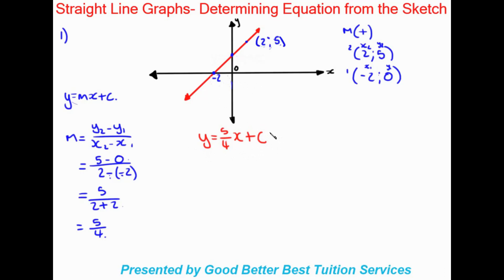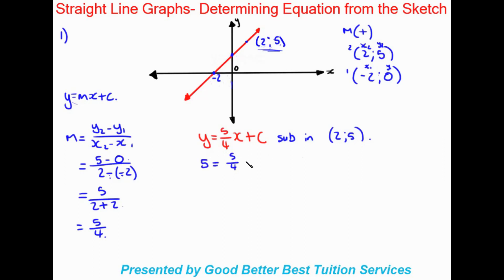We'll take the point (2, 5) and substitute it in. Two is x and five is y, so in place of y we put five, equal to five over four times two, plus c. Once we substitute that in, the only unknown is c, so we're able to work it out.